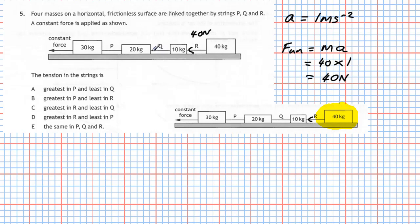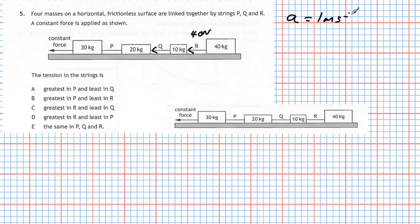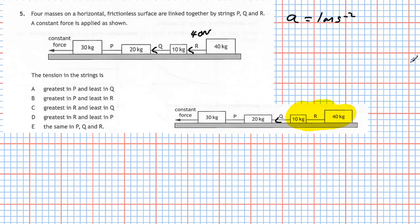For the tension in string Q, we isolate the 40 kg box plus the 10 kg box it's pulling. String Q doesn't know what's behind it — it just sees a combined mass of 50 kg. So tension in Q equals 50 kg × 1 m/s² = 50 newtons.